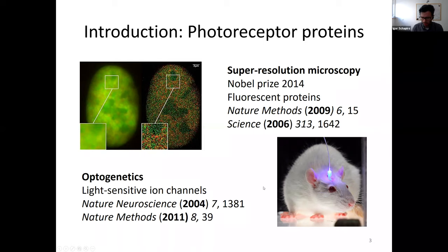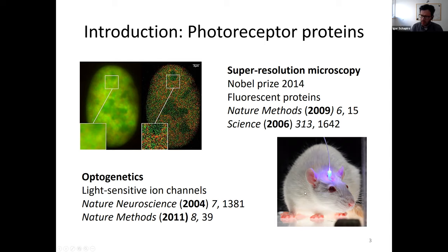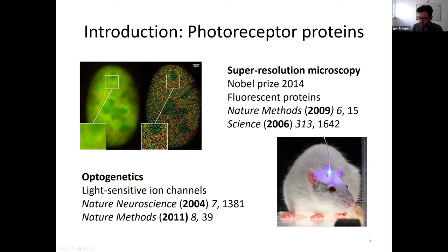Another field where photoreceptor proteins have been used is optogenetics. Optogenetics is a combination of opto, meaning light control, and genetics. The genes of photoreceptor proteins are inserted into the living organism, and these genes usually encode a retinal protein, making the cells where they are inserted light-sensitive. Here you see the famous experiment of a living mouse which has a light-sensitive retinal protein in its neural cells, with an optical fiber cable guiding light through the skull to make it controllable by light.